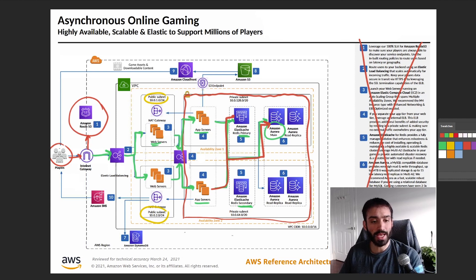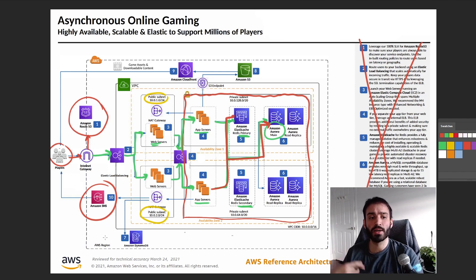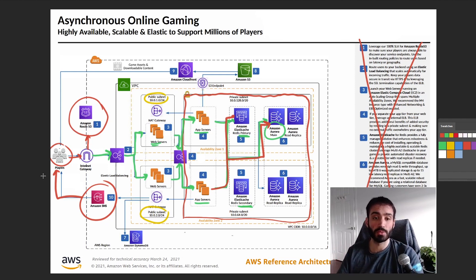The next part is SNS — this is great if you want to push notifications back out to your players. For instance, you could say something like 'Your friend Jamie got a badge' to motivate people to log back into your game. It's a very easy way to do it, and SNS has native integration with iPhone, Android, and the Amazon API, so you can directly integrate with these devices and send push notifications.